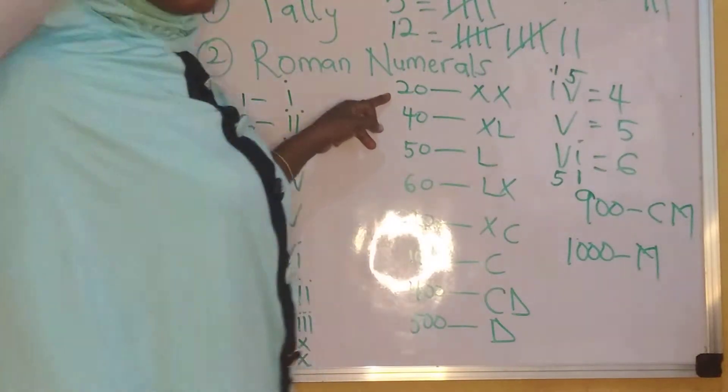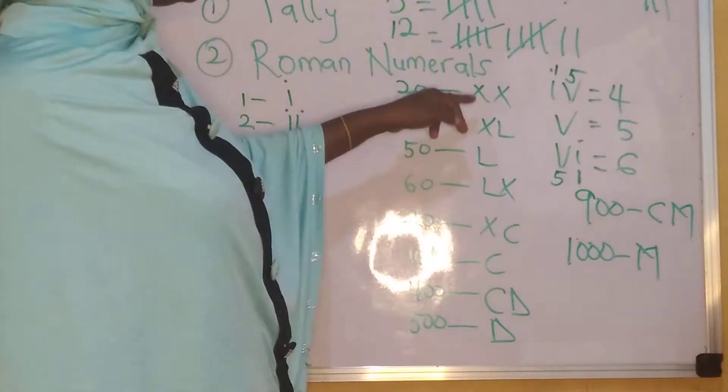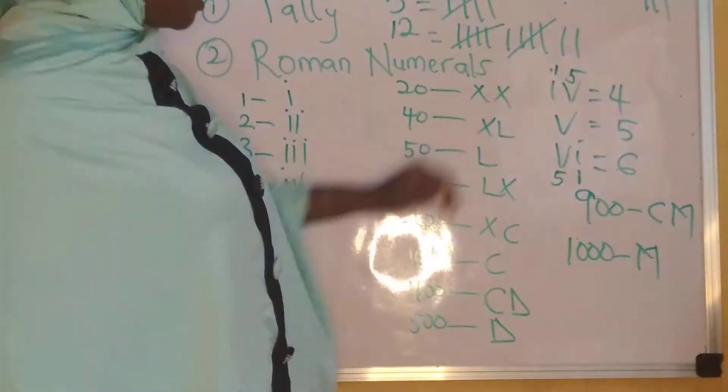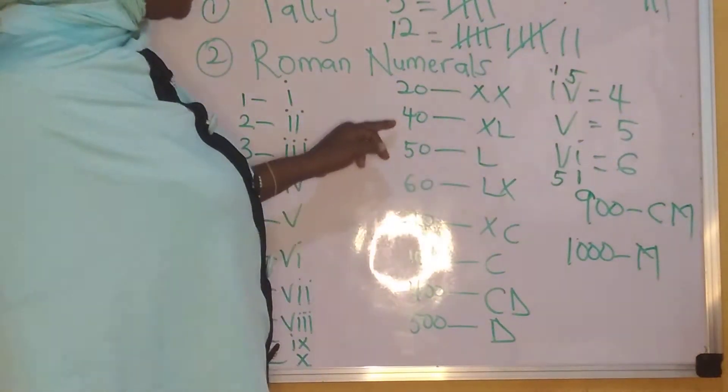Now, let's proceed to other numbers. I have 20 here. 20 means XX, which is 10, 10. 10 into 2 places. And that is 20. 40 is XL. 50 is L.